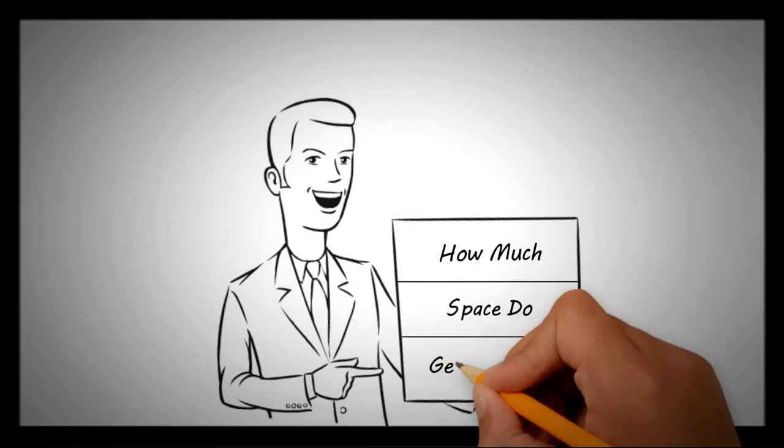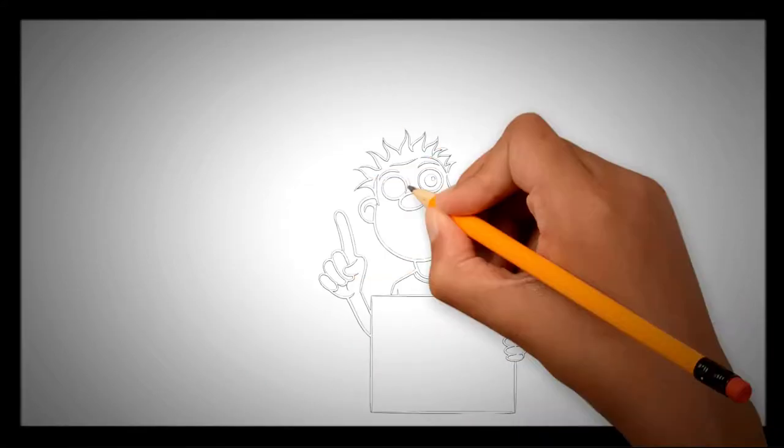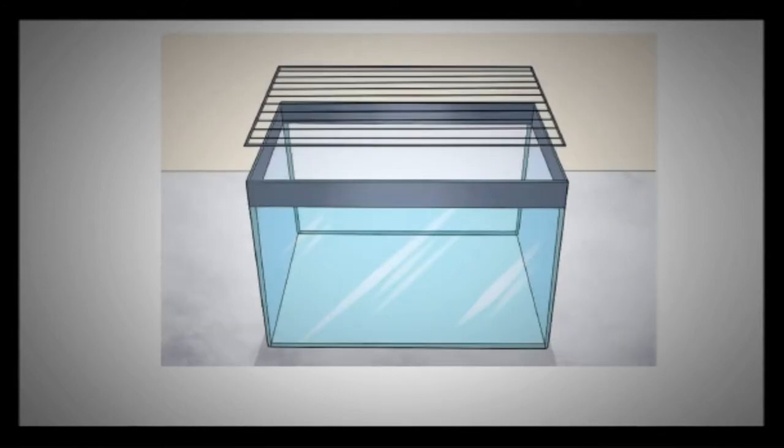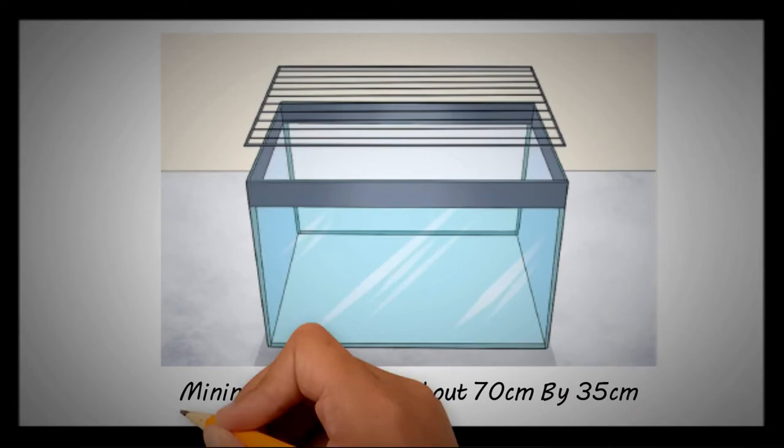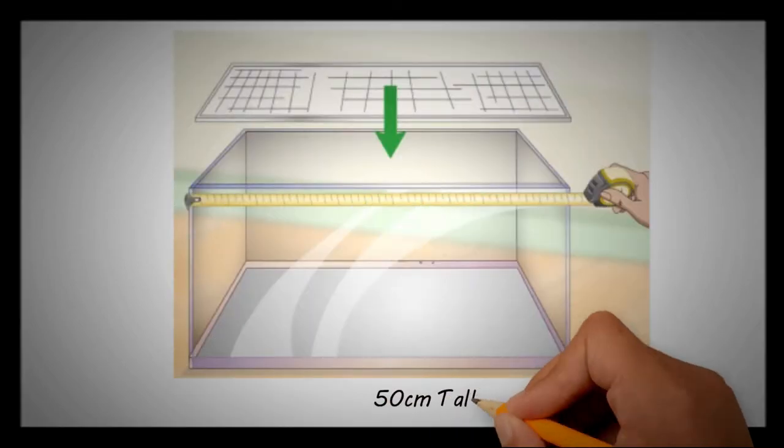How much space do gerbils need? You need about 10 gallons of space per gerbil. The floor surface of the cage should have a minimum length of about 70 cm by 35 cm. It should be 50 cm tall.